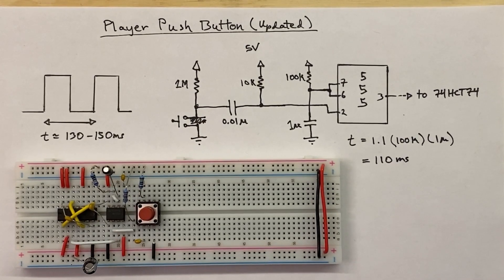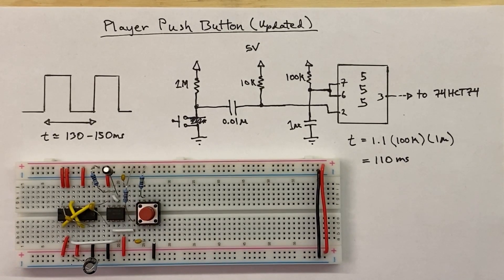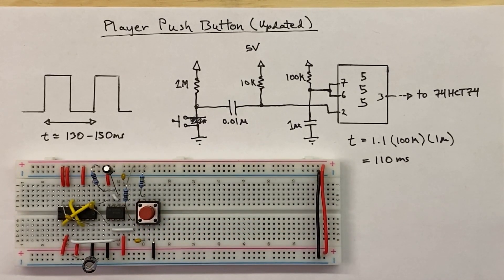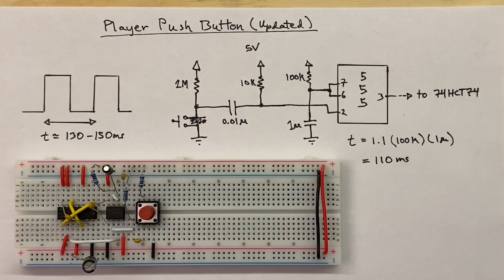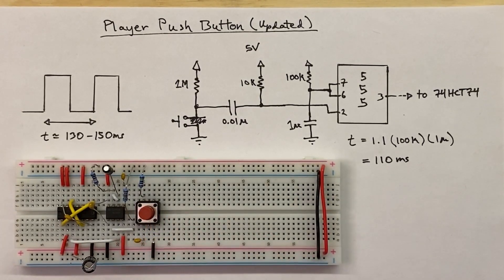We have to fix the bug in our circuit where we get two pulses when hitting the push button in fast game mode. It worked alright at a moderate pace but when the clock is going really fast, debouncing can stop working. So I timed myself to see how quickly I could hit the push button in two consecutive pushes in a controlled manner. It turns out it ranges between about 130 to 150 milliseconds, at least for this push button and my fingers.